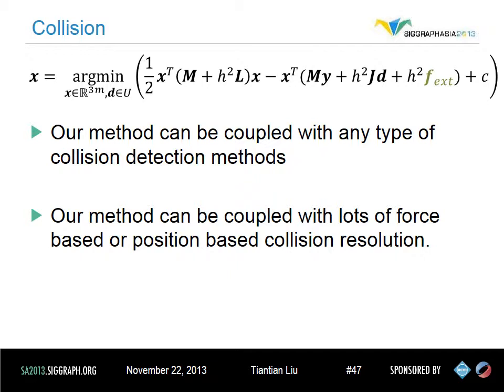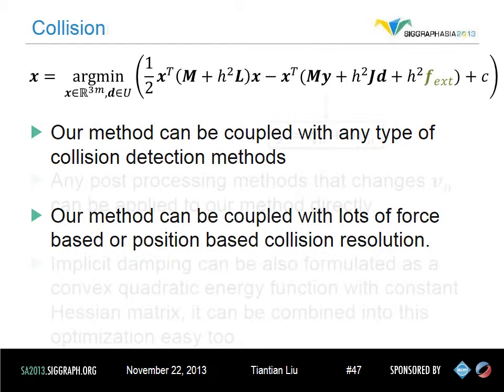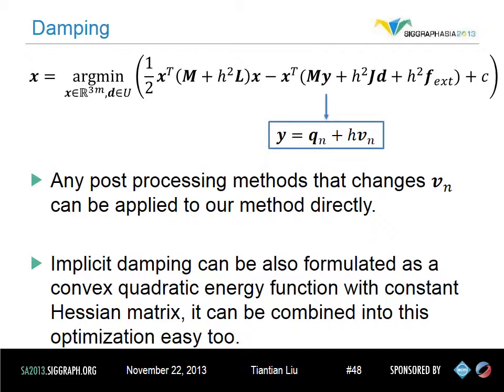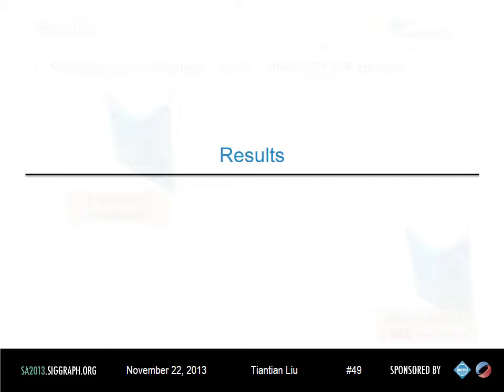For collision, our method can be coupled with any type of collision detection and resolution method. We can treat penalty forces within one time step as a constant force and combine it into the external force term. Or we can short-circuit this process and move all illegal vertices to collision-free states like position-based dynamics. For damping, the current velocity v_n is taken into account in the y term, and we can apply any type of post-processing damping method that changes v_n at the end of each frame, such as velocity dragging. Also, force-based implicit damping models can be formulated as a convex quadratic term with constant Hessian matrix and combined into the optimization formula.